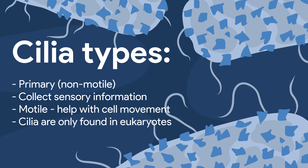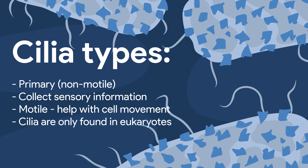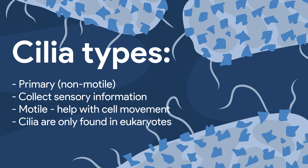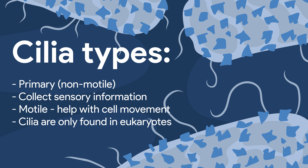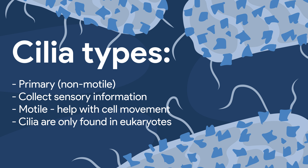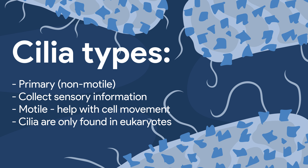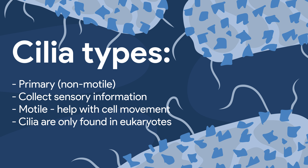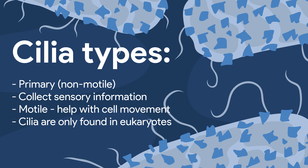More complex organisms, like mammals, have both kinds of cilia. Cilia are very complex, but they're also very old, and they're only found in eukaryotes.